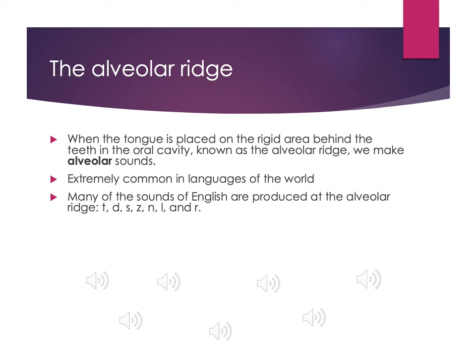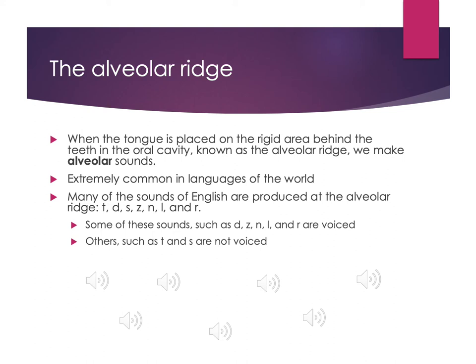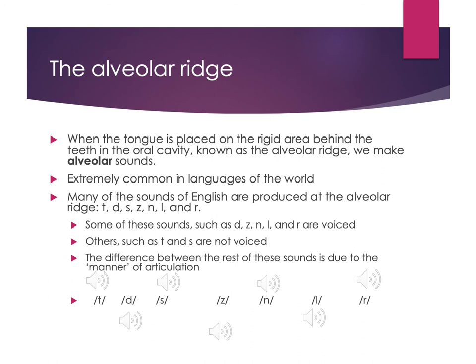English alveolar sounds include T, D, S, Z, N, L, and R. Some are voiced — D, Z, N, L, R — and some are voiceless — T and S. Because we have so many different sounds happening at the alveolar ridge, the distinction between them can't just be due to voicing. This is where that third factor — manner of articulation — comes in, which we'll discuss in the next lecture.